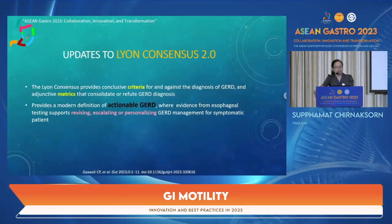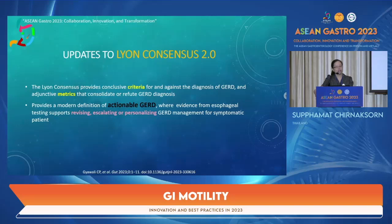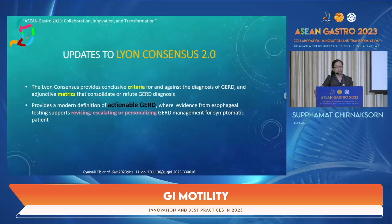Moving to the update of Lyon Consensus Version 2: the Lyon Consensus provides conclusive criteria for and against the diagnosis of GERD, and mentions adjunctive metrics that consolidate or refute the GERD diagnosis. This updated version provides a modern definition of actionable GERD, where evidence from esophageal testing supports revising, escalating, or personalizing GERD management for symptomatic patients.